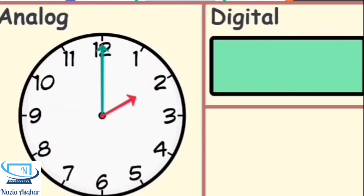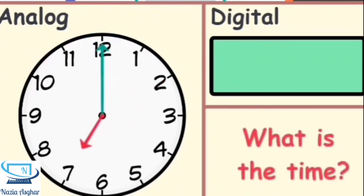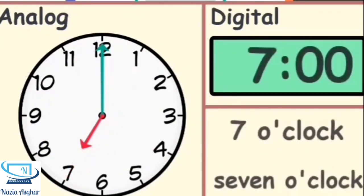Try to remember the basics: when the minute hand is pointing at the number 12, it is something o'clock. Then look at the hour hand to tell you what that something o'clock is. The time is seven o'clock.